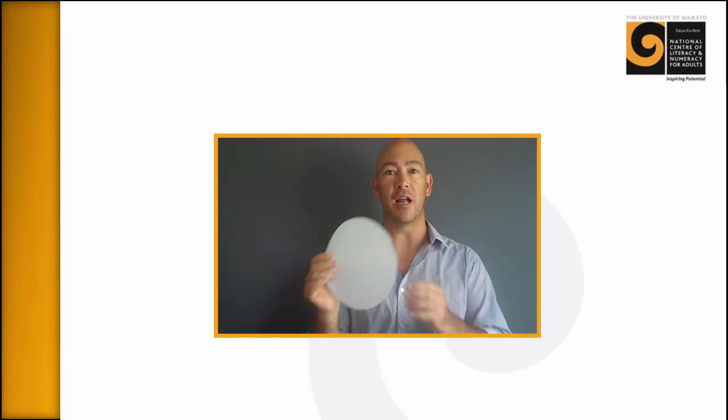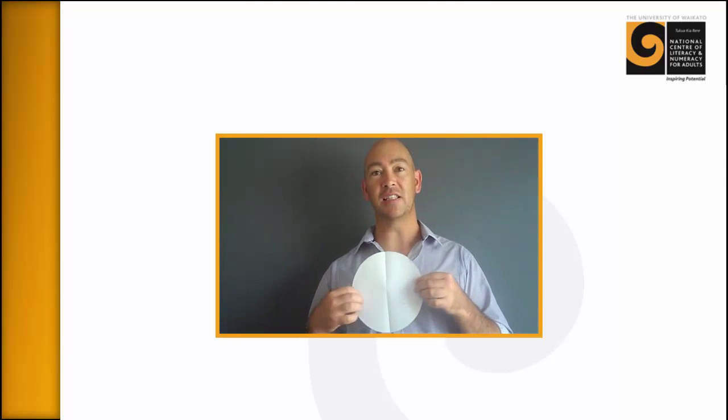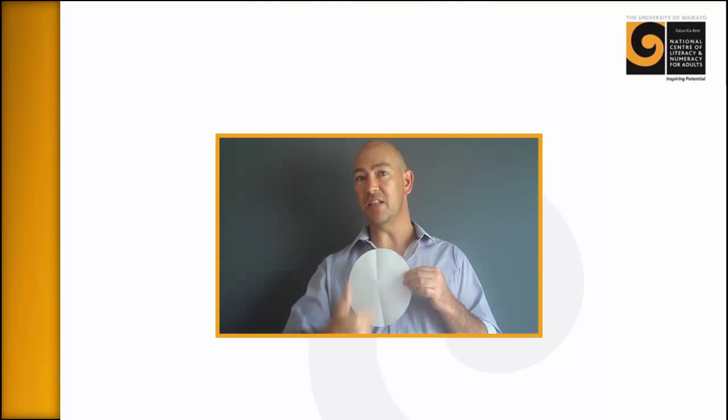It's really simple. First of all, you hand out the circle to each of the learners and you simply ask them to fold it in half. Once they're folded in half, what I like to do is I like to ask them to rule a line directly down the diameter.